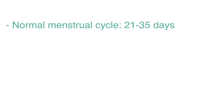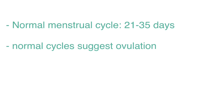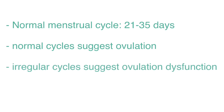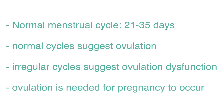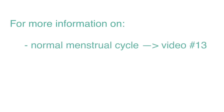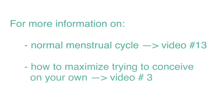A normal menstrual cycle, referring to the interval of time from one menses to the next menses, usually ranges 21 to 35 days. Cycles in this interval strongly suggest ovulation, and a cycle that falls outside of this interval strongly suggests ovulation dysfunction. Having regular menstrual cycles and regular ovulation is important because a pregnancy cannot occur without ovulation or the release of the egg. It's important to understand how the normal menstrual cycle works and the timing of the fertile window when trying to conceive on your own.